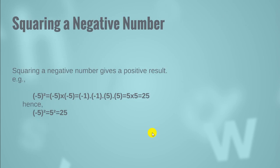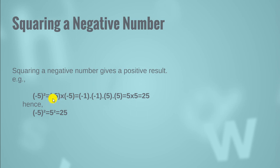Squaring a negative number gives a positive result. For example, negative 5 raised to the power 2 means minus 5 multiplied by minus 5. We extract the minus 1 from both fives, and minus 1 multiplied by minus 1 gives a positive result. So 5 multiplied by 5 gives 25, and hence negative 5 raised to the power 2 equals 5 squared, which equals 25.